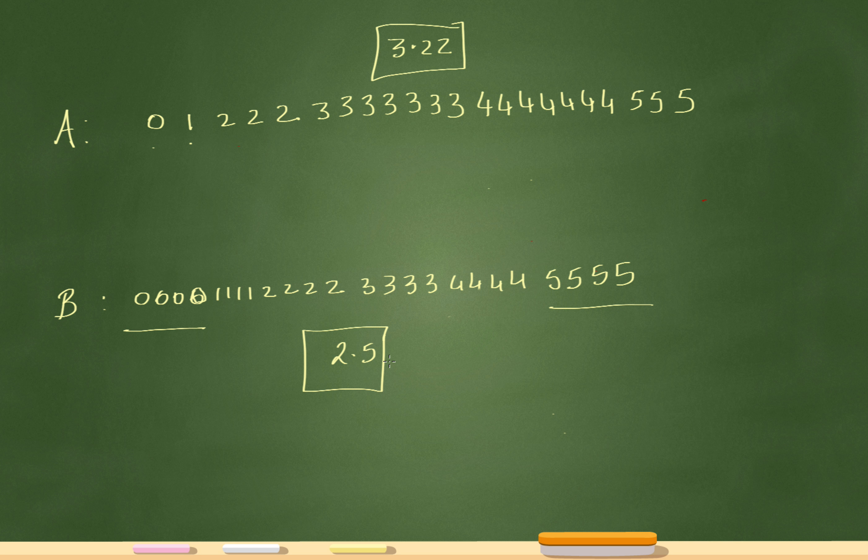Because 5 is 2.5 away from 2.5, and similarly, zero is 2.5 away from 2.5. So these eight numbers have a distance of 2.5 from the mean.